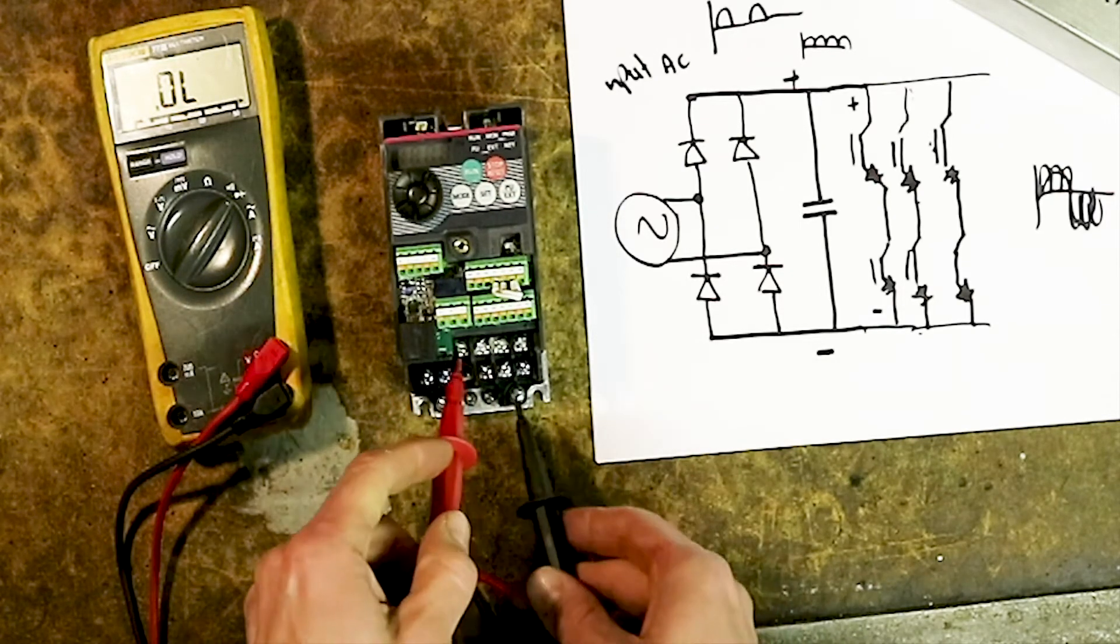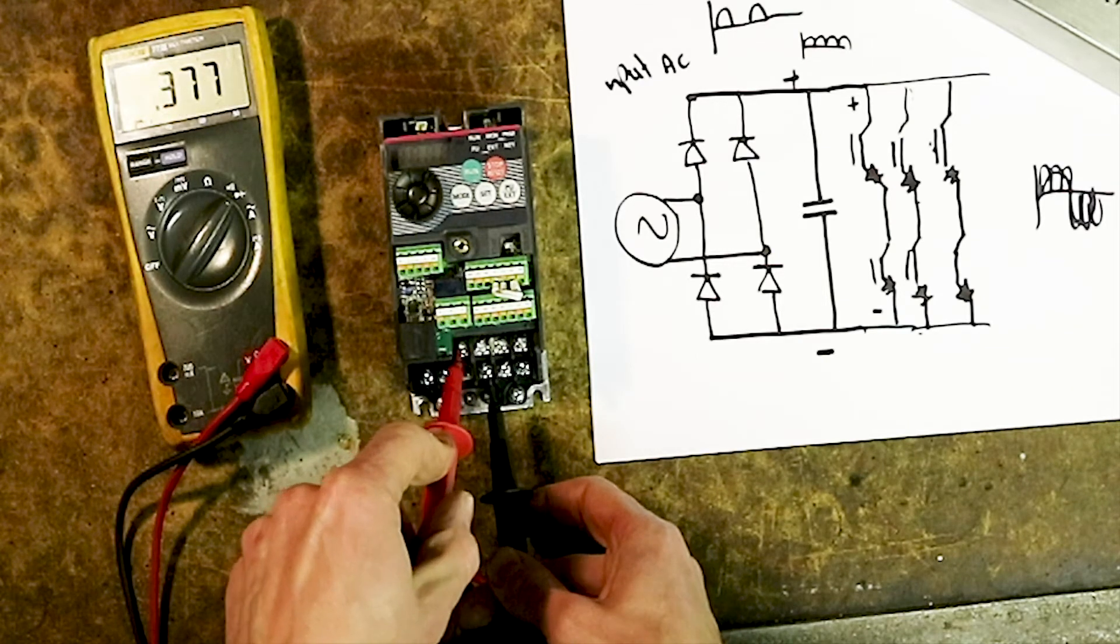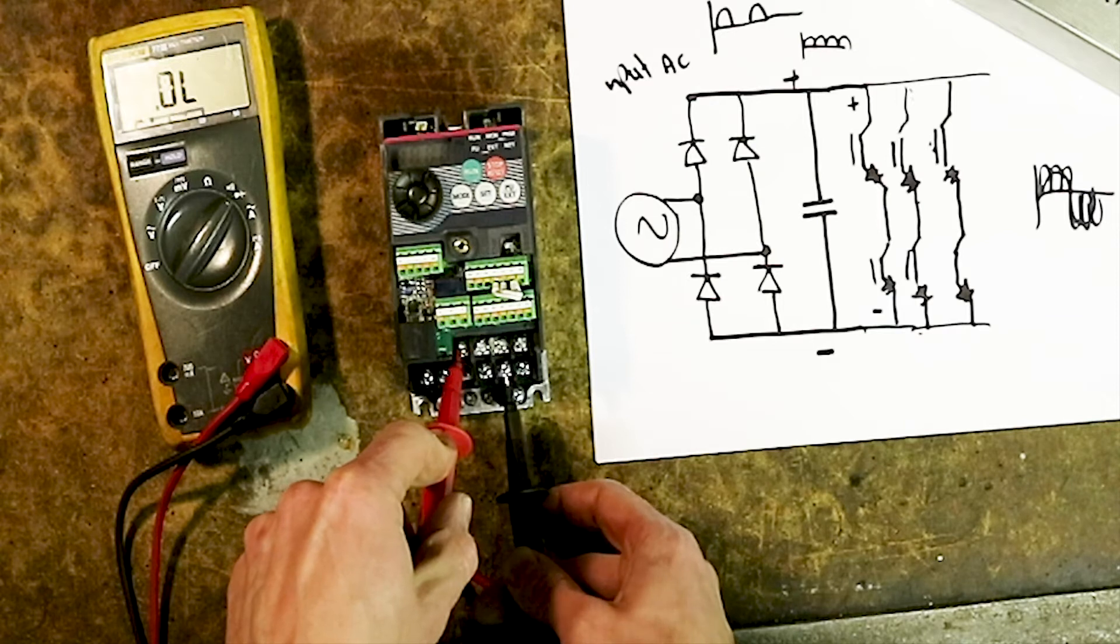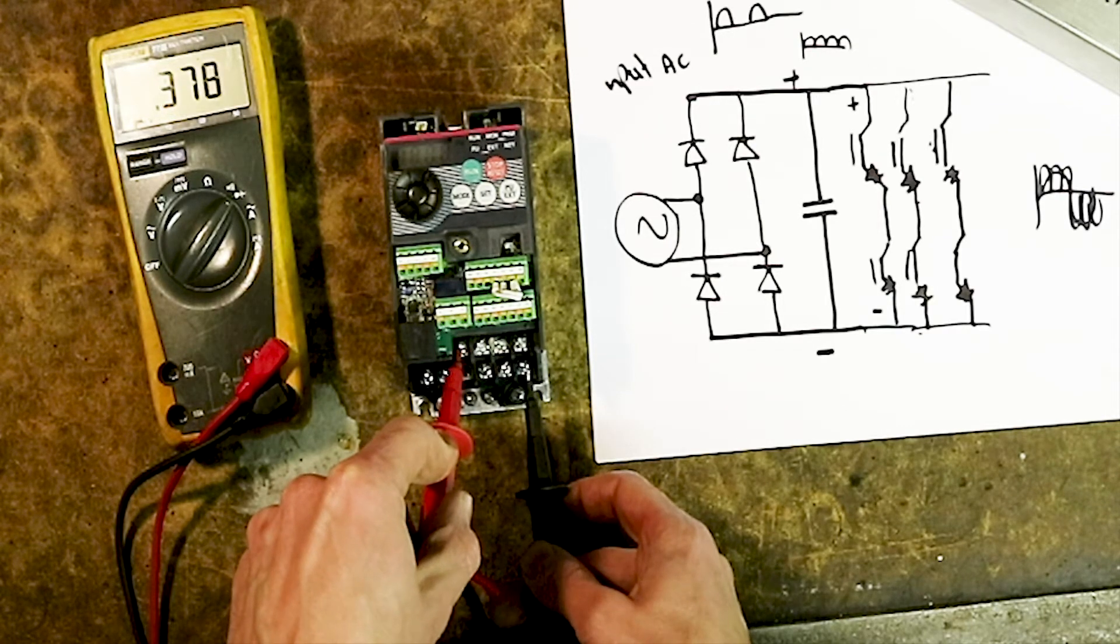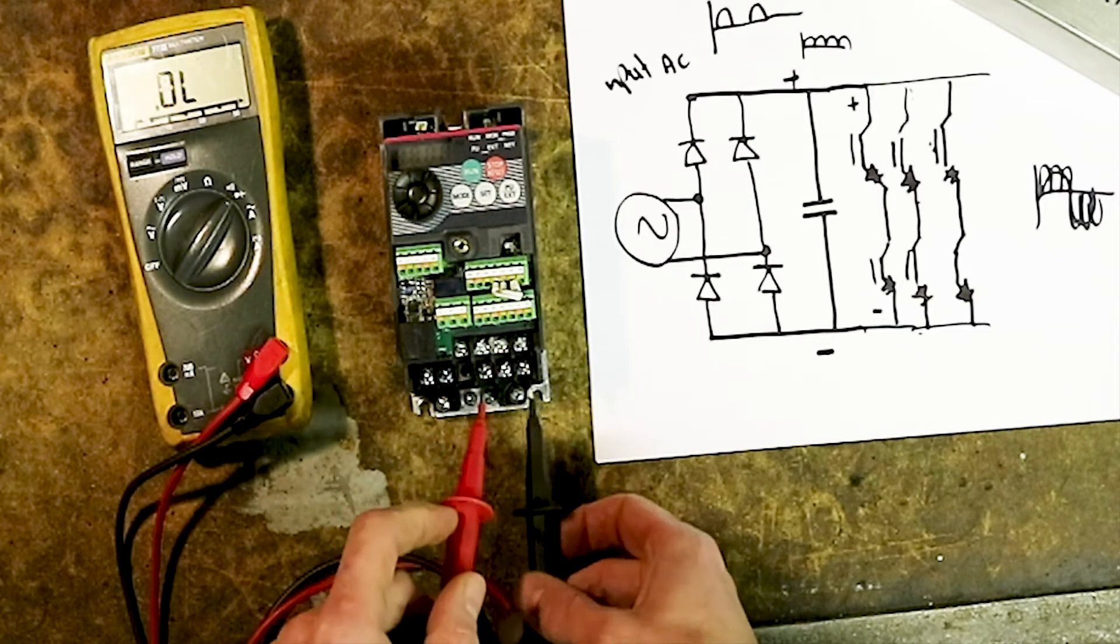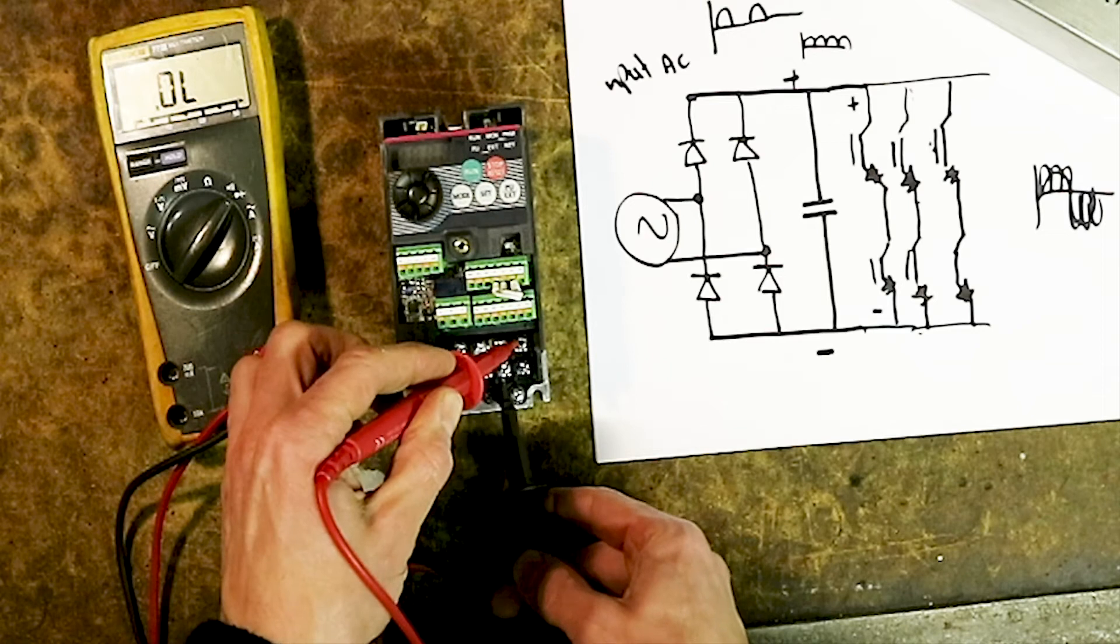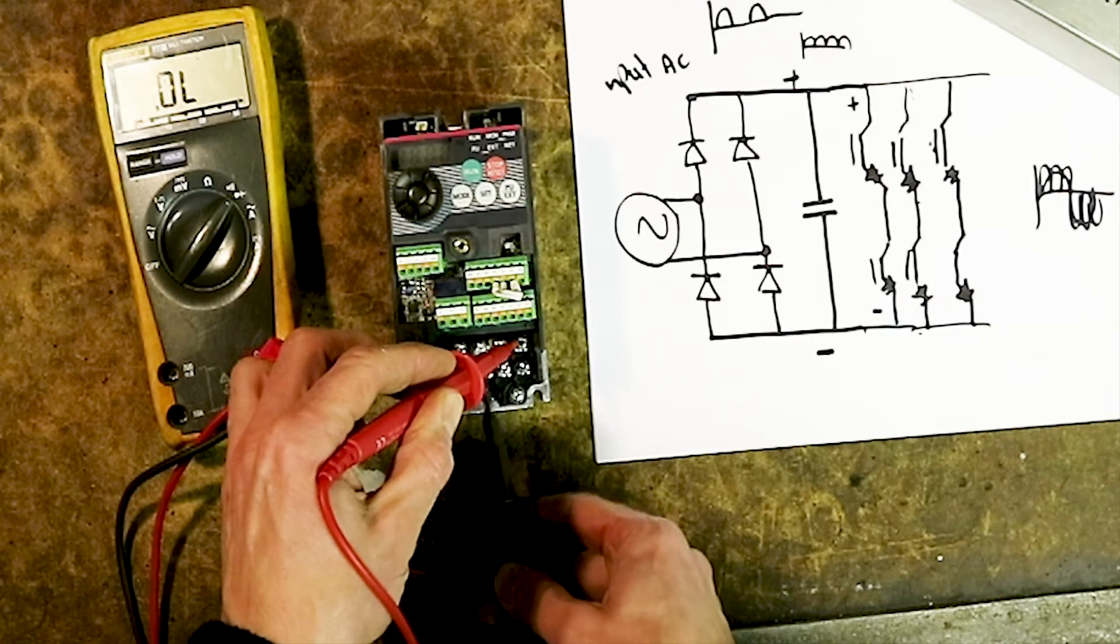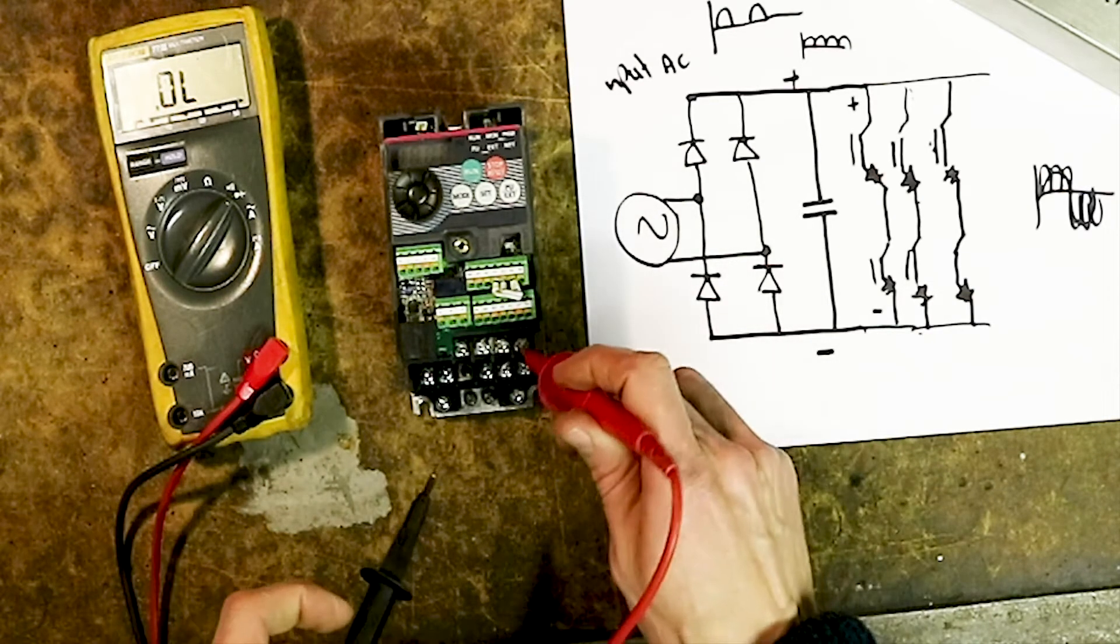We're going to test the other side of it. 0.377 - we want to see that these are all fairly well balanced. They're all fairly well balanced and look quite good.